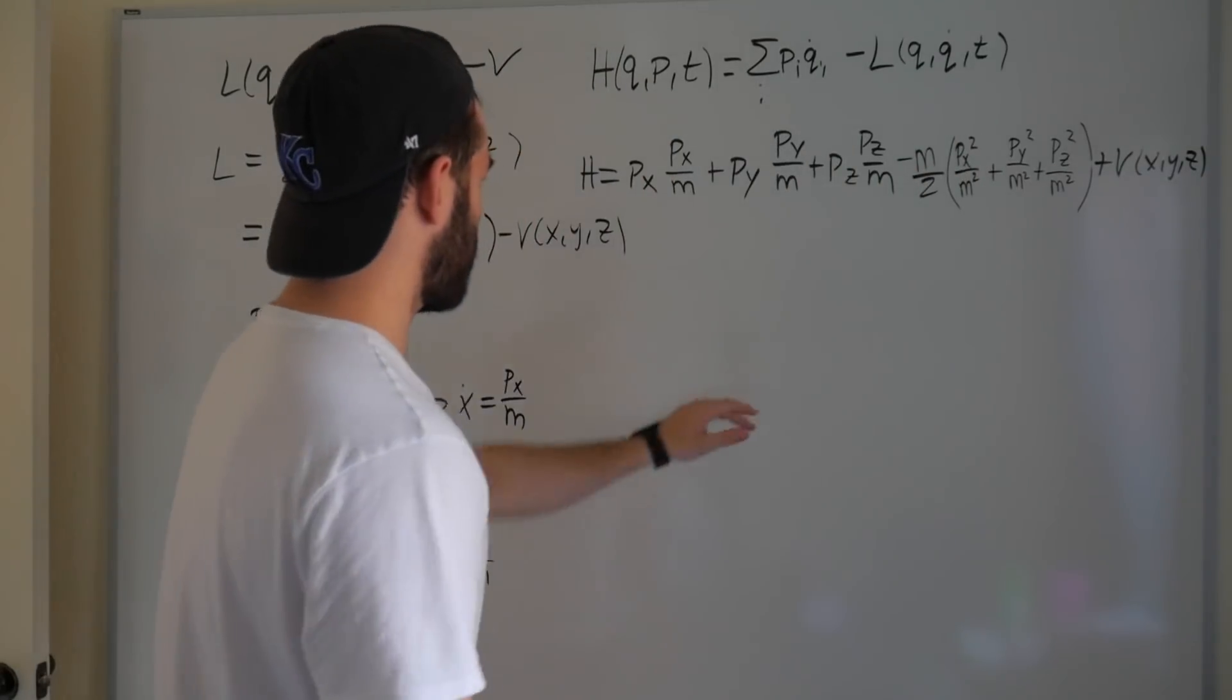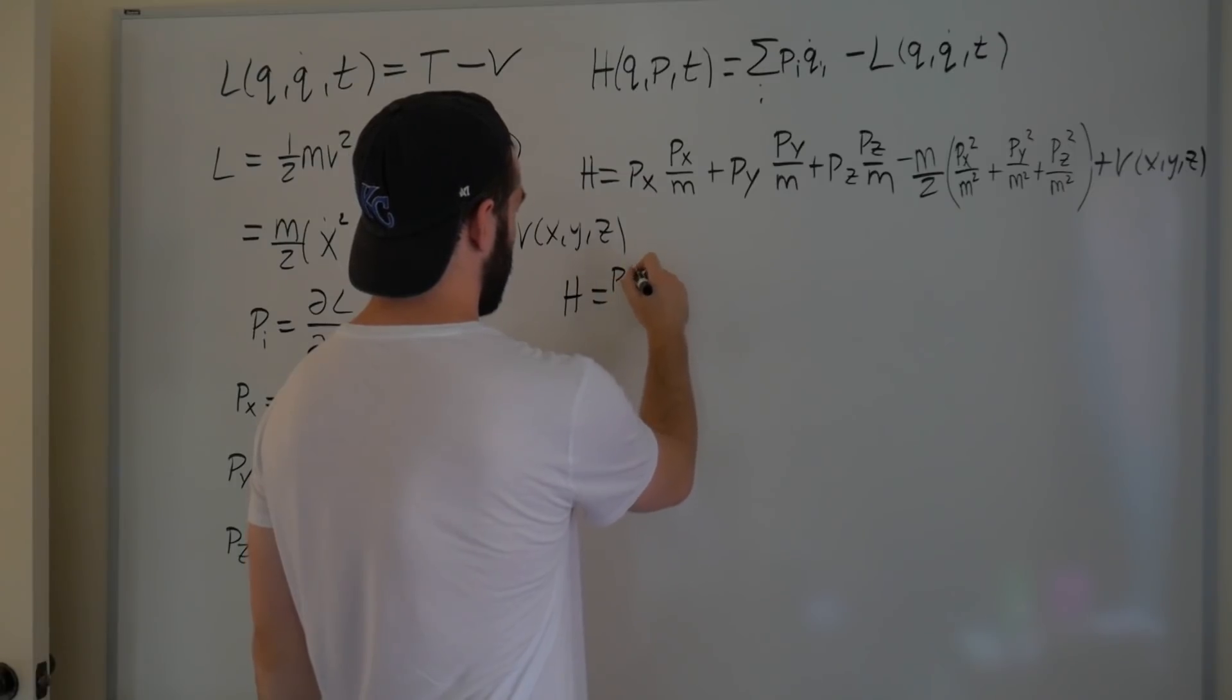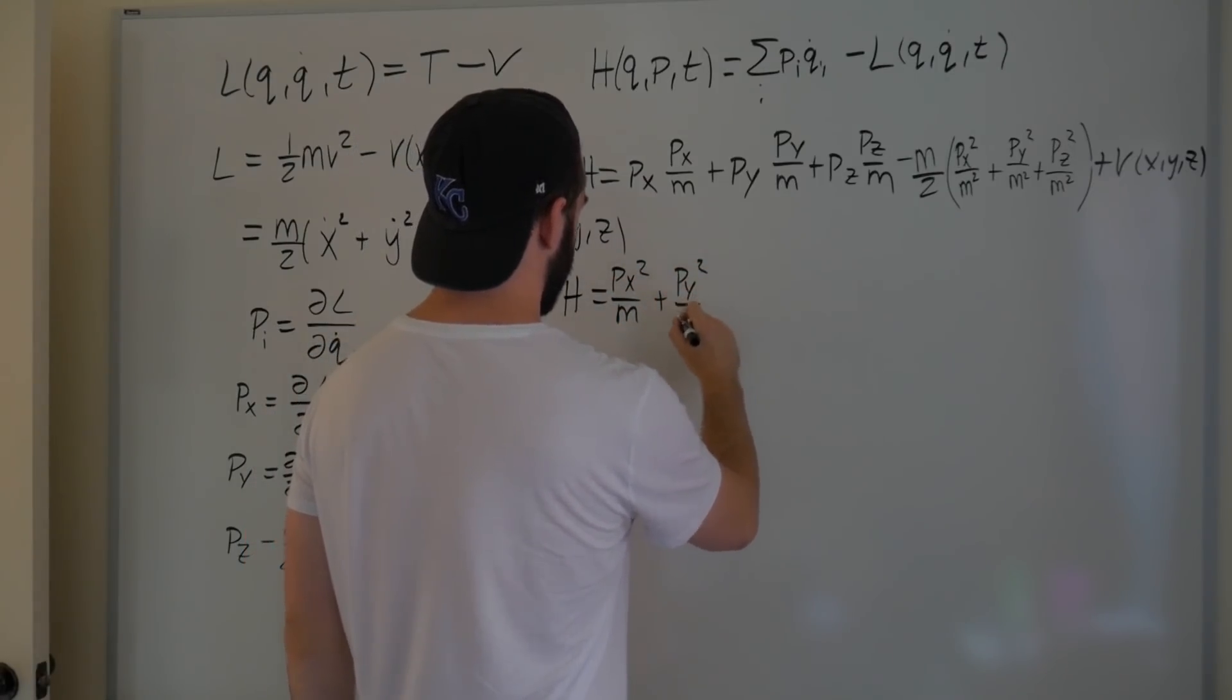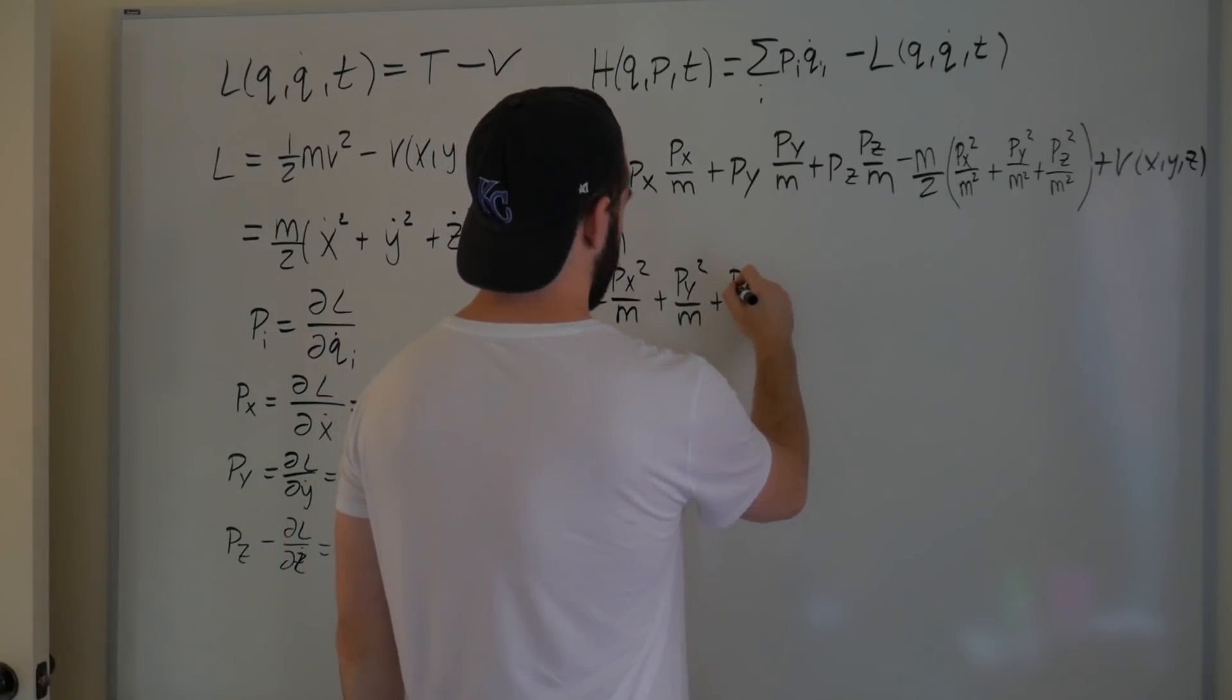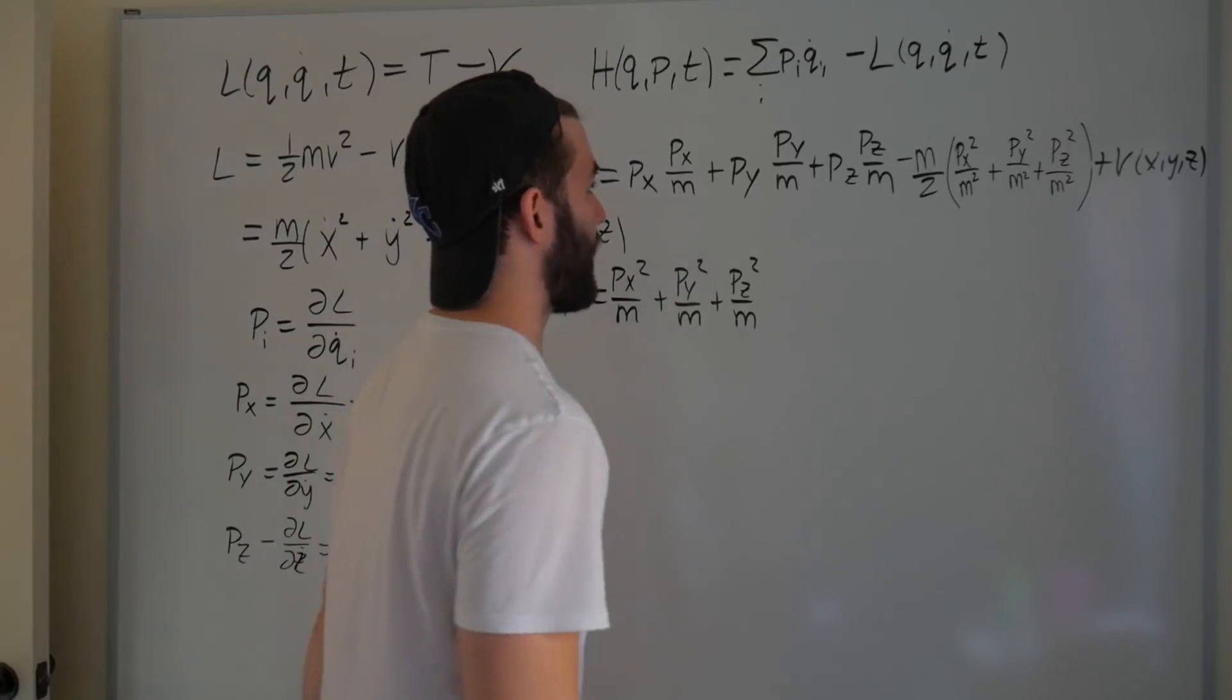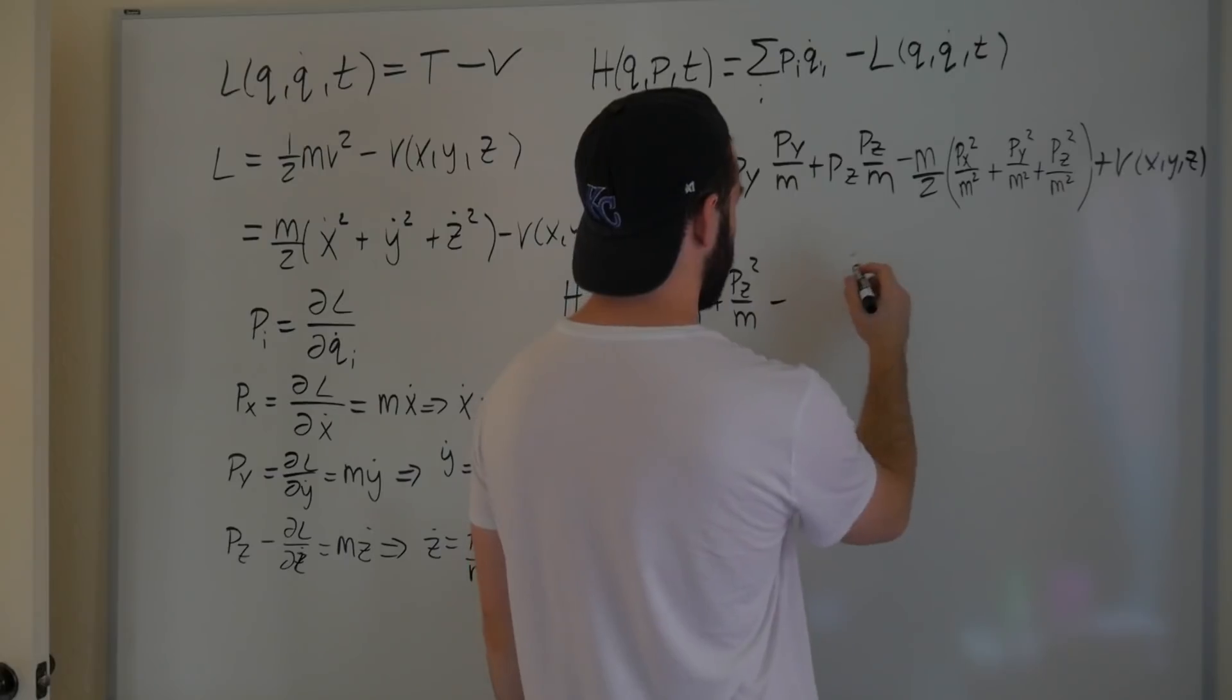All right, now let's get all the dust to settle. So this tells us that H is equal to px squared over m, plus py squared over m, plus pz squared over m. I'm going to show you how to write this in a more compact way at the very end, because this is a little annoying.